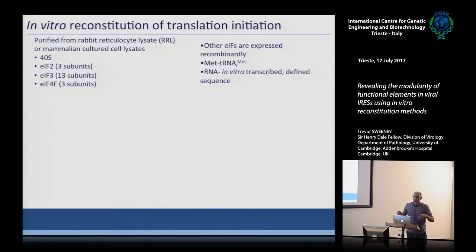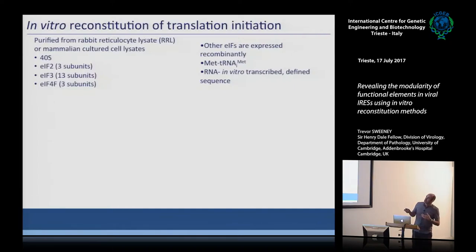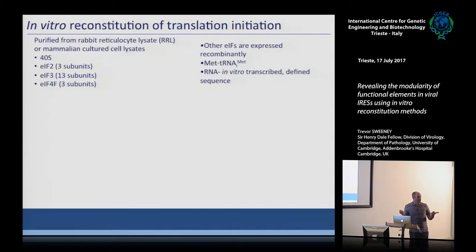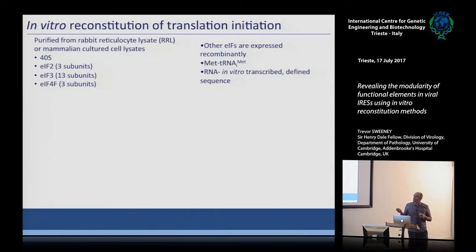The in vitro reconstitution system takes quite a while to set up because of extensive protein purification. We start with a large volume of rabbit reticulocyte lysate and purify 40S ribosomal subunits and native initiation factors EIF2, EIF3, and EIF4F. EIF3 is made up of 13 different subunits — expressing these individually in E. coli and getting them to reassemble into a functional complex is not yet achievable, so we source these complexes from lysates.